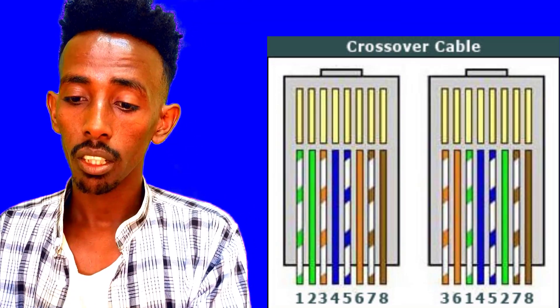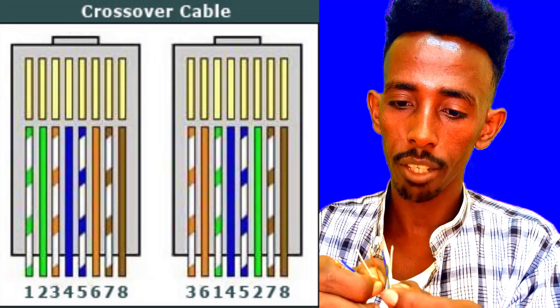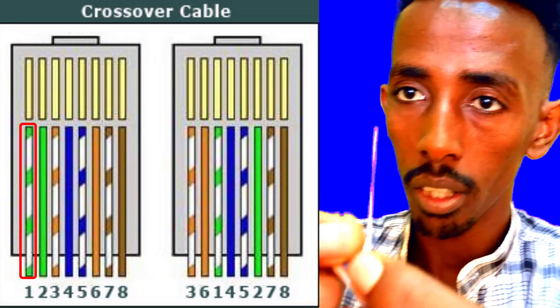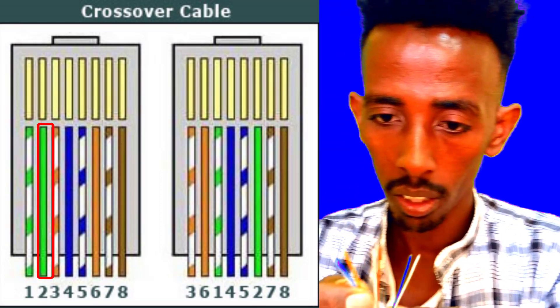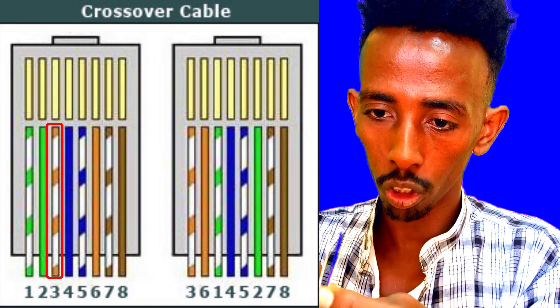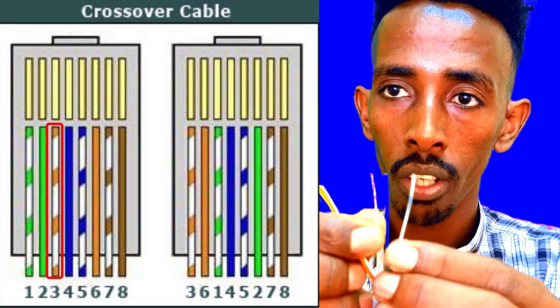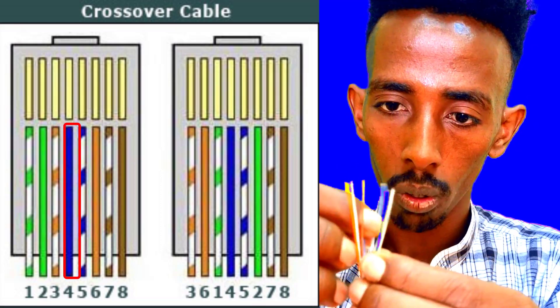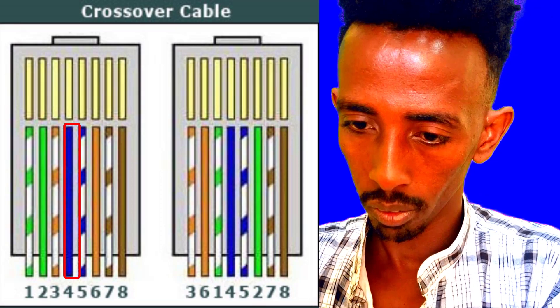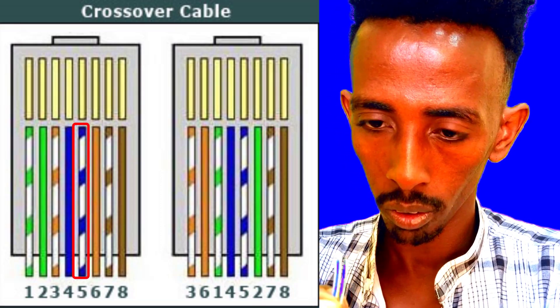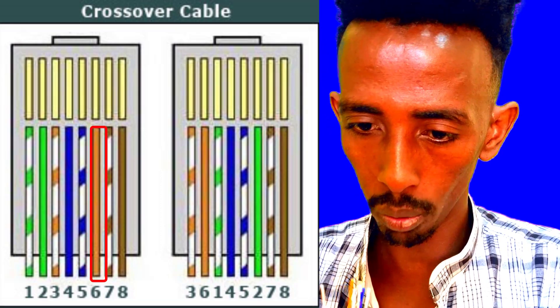That's why, we will say that the straight-through wiring standard is: white-green, white-green, green, white-orange, and white-orange. We are supposed to be doing: white-green, green, white-orange, orange, blue, blue, white-blue, orange, white, brown, brown.